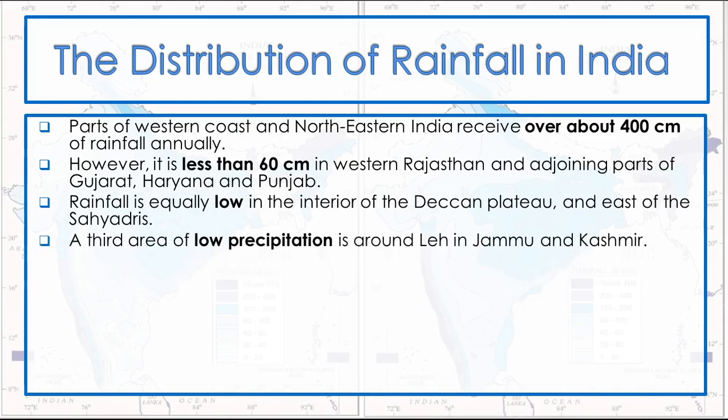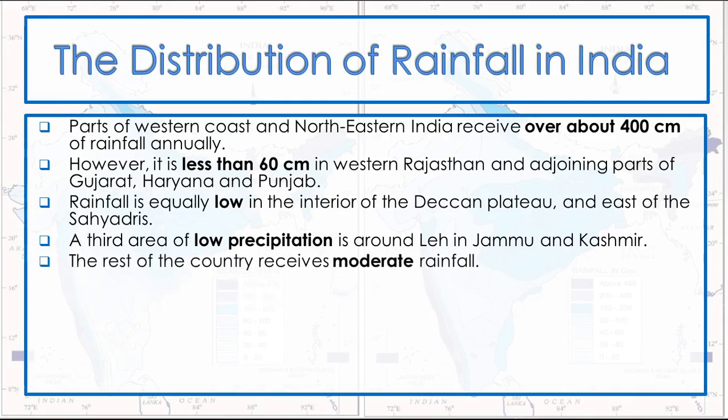A third area of low precipitation is around Leh in Jammu and Kashmir. The rest of the country receives moderate rainfall. Snowfall is restricted to the Himalayan region.